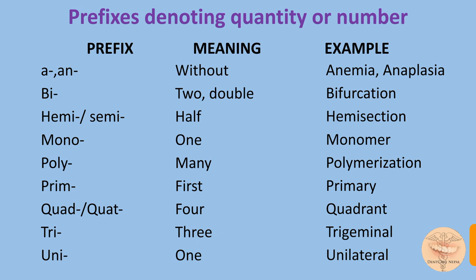The prefix 'mono' means one — monomer, monopoly, monocotyledons, there are many. The prefix 'poly' means many — polymerization, polygon, polycythemia. The prefix 'prime' means first; for example, primary — the primary teeth are the teeth that come first in the mouth of the human body.